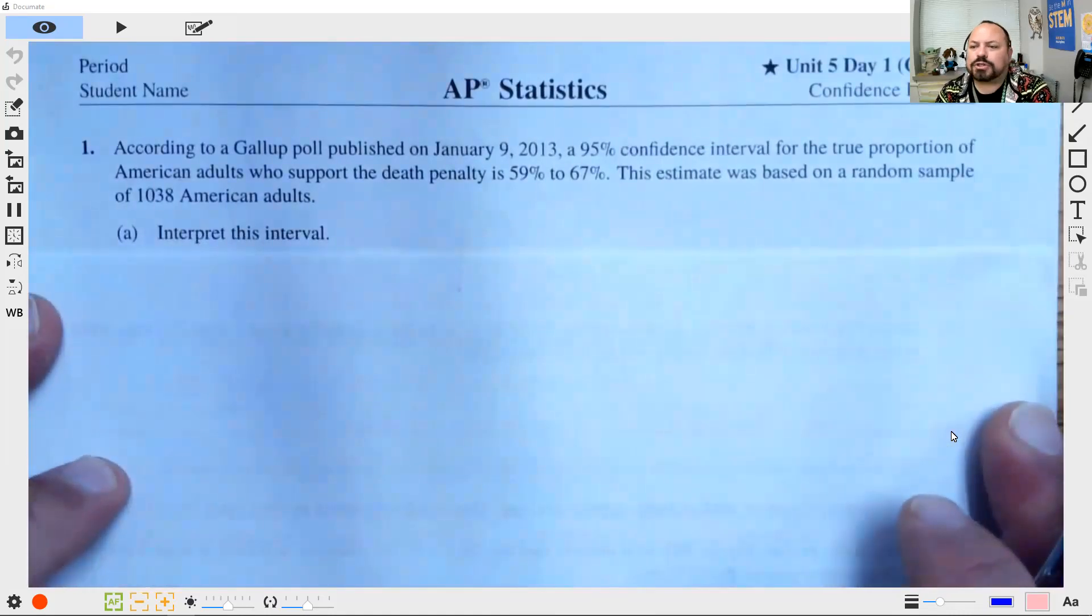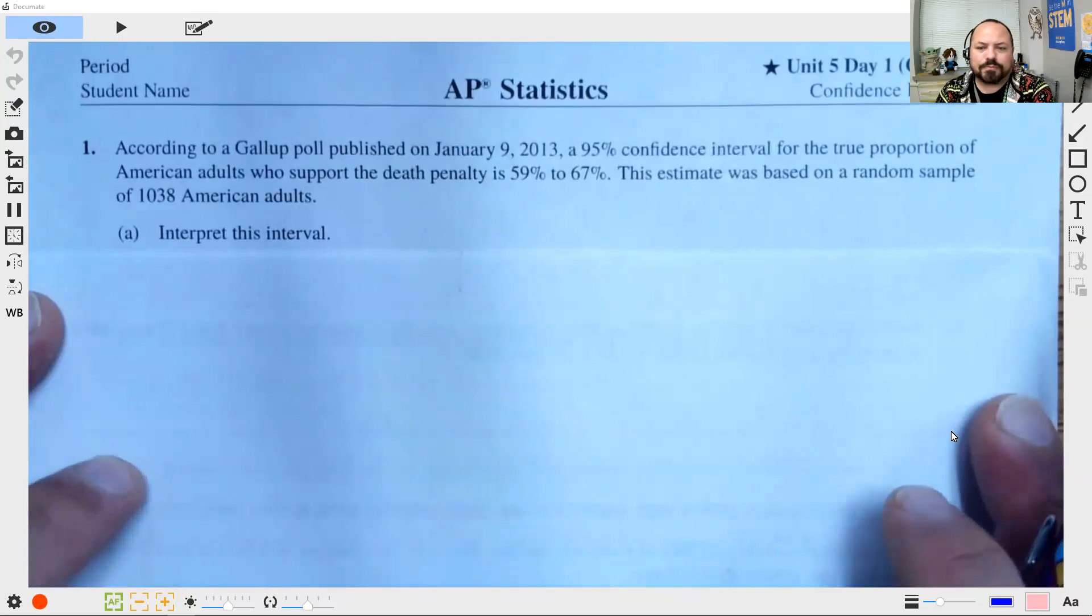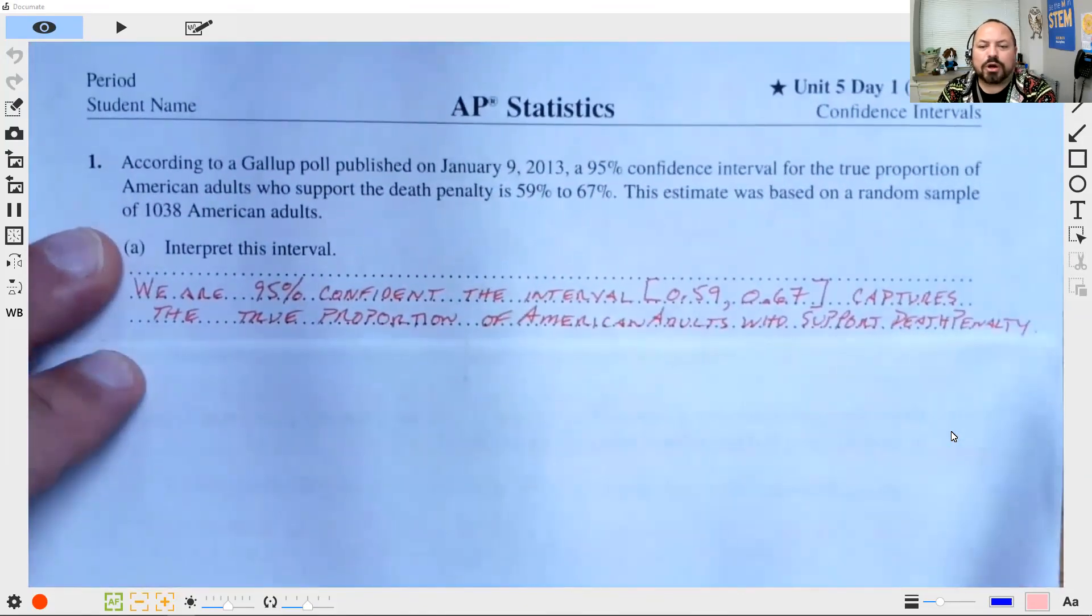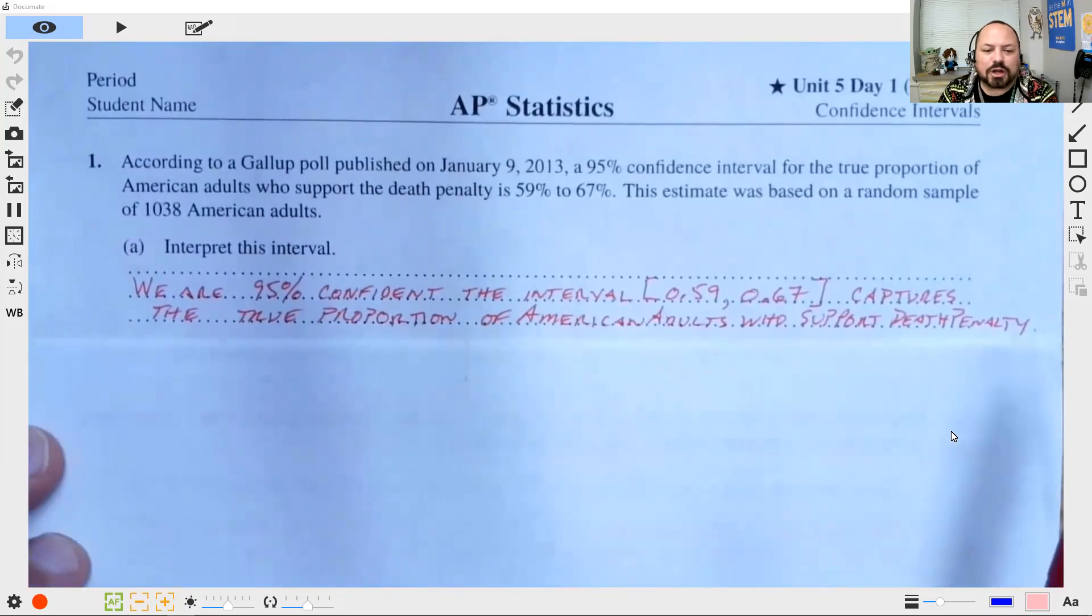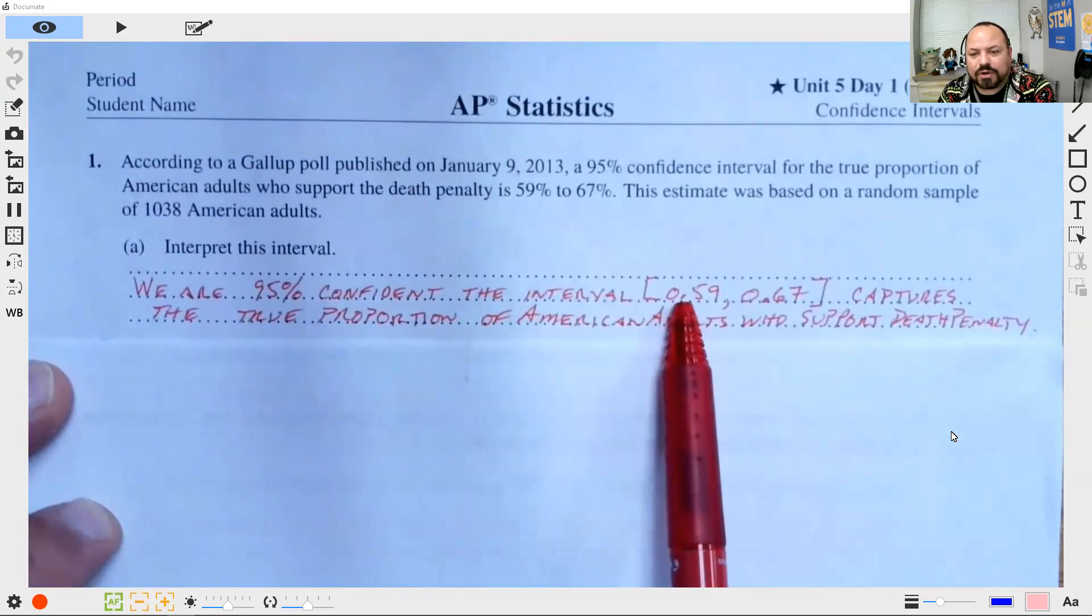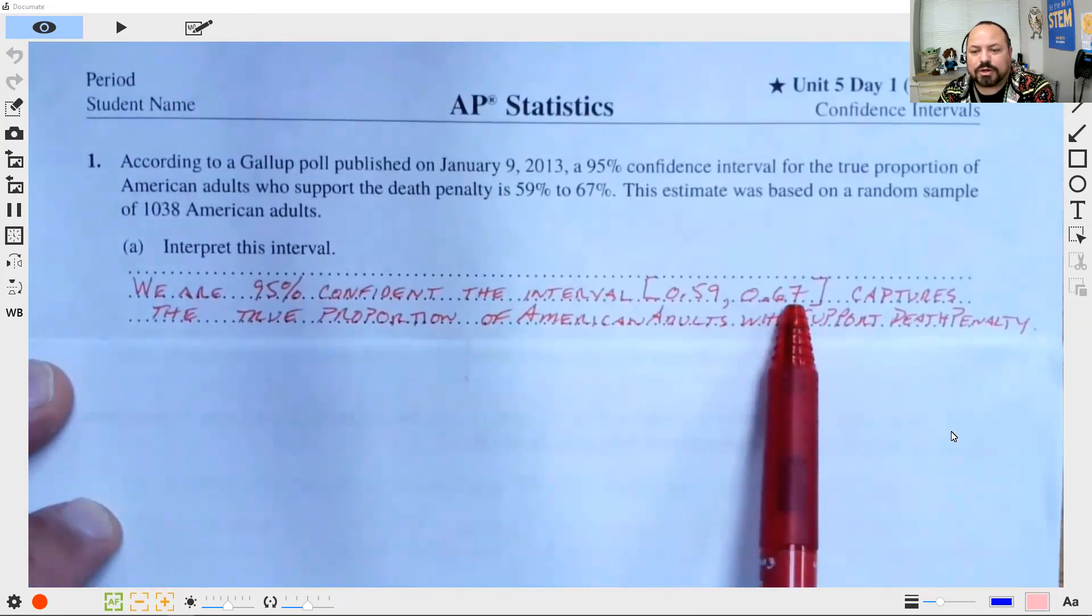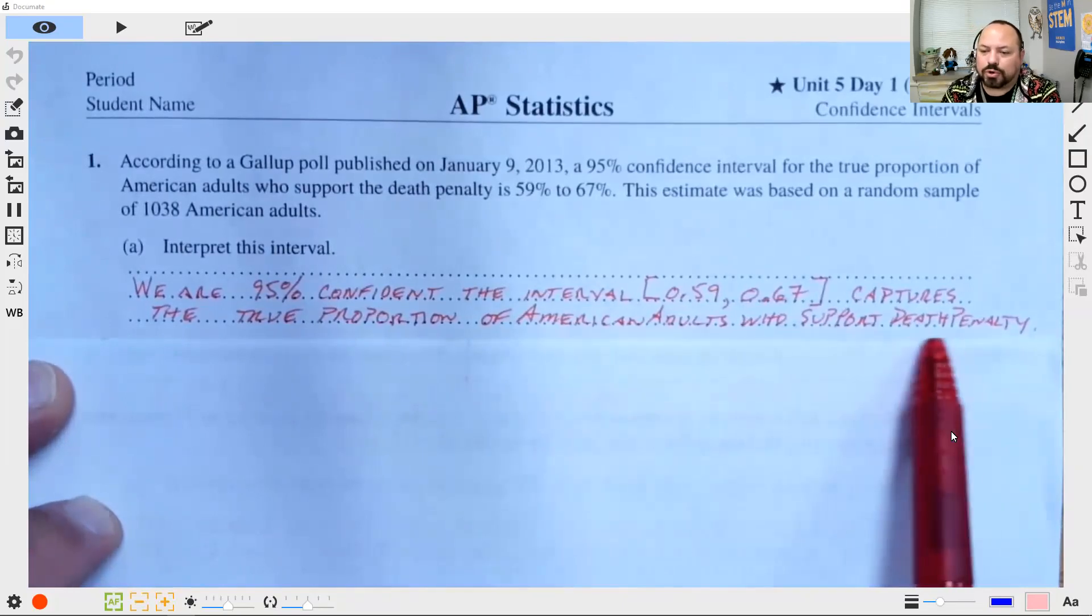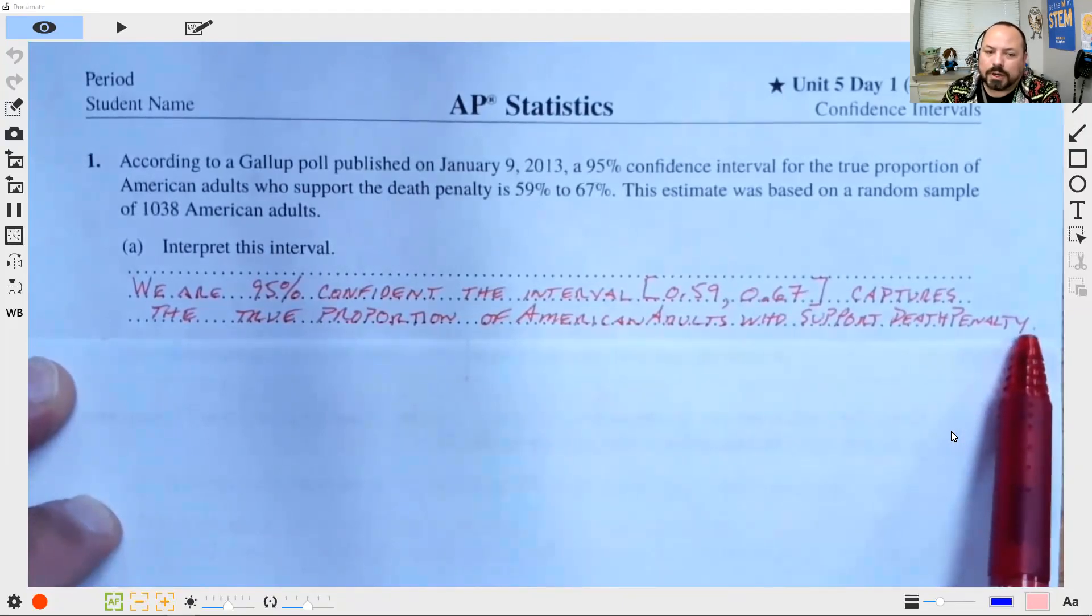Okay, so our first step is to interpret the interval. What does this interval mean? Well, what this interval represents is that we are 95% confident the interval from 0.59 to 0.67 captures the true proportion of American adults who support the death penalty.